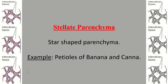Stellate parenchyma consists of star-shaped parenchyma cells found in the petioles of banana and Canna, offering mechanical support. The stellate parenchyma has arms arranged radially giving it a star shape, and it also possesses intercellular spaces.